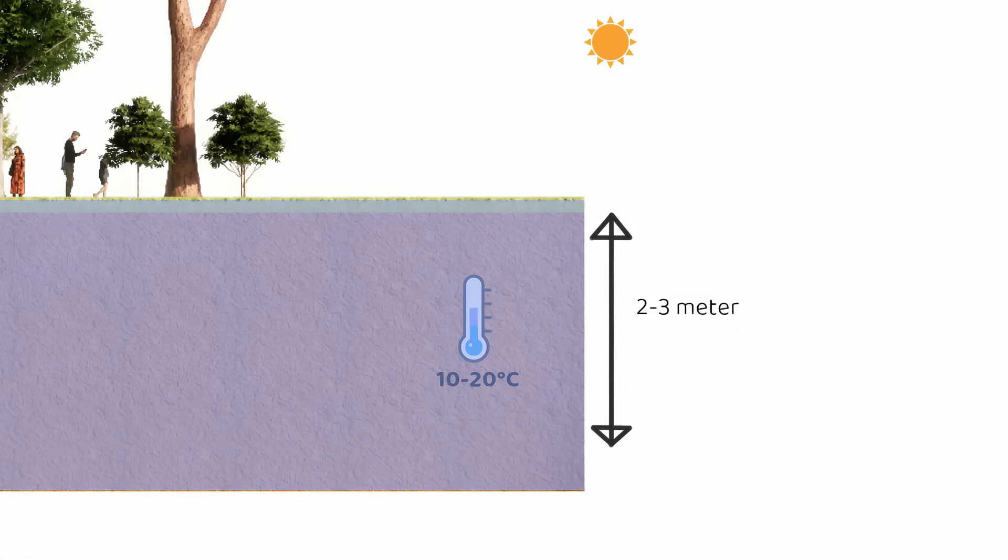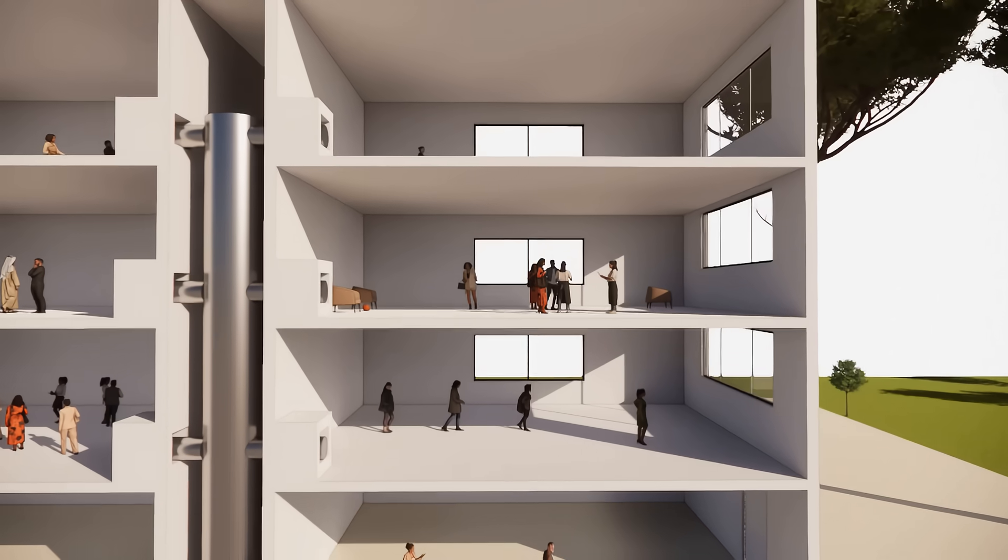This means that in the summer, the ground is cooler than the air, and in the winter, it's warmer. And this is exactly what earth-air tunnels take advantage of.